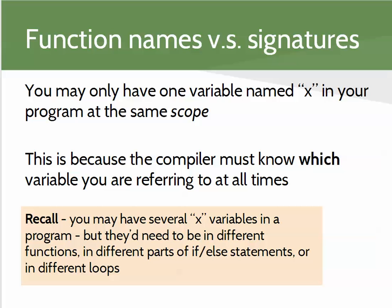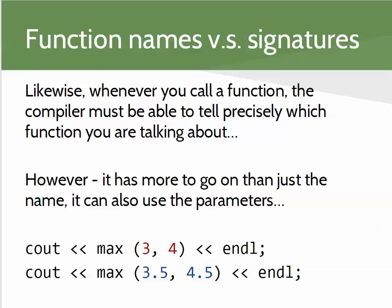We need to understand what makes a naming collision and what will cause a conflict when we name functions. Just like a variable, when we use a function the compiler must be able to tell precisely which function we're talking about. Unlike variables, the compiler has a little bit more to go on when we use a function.